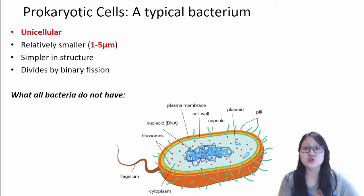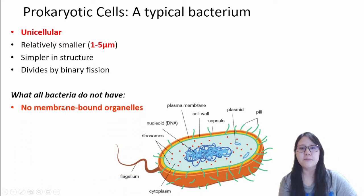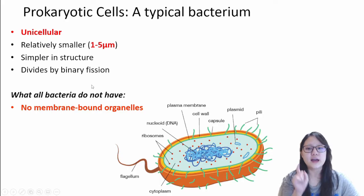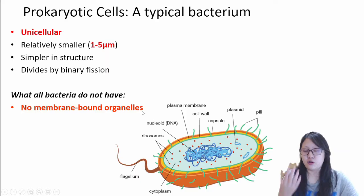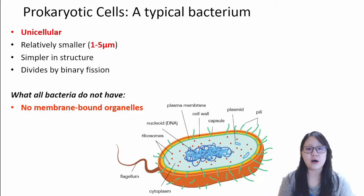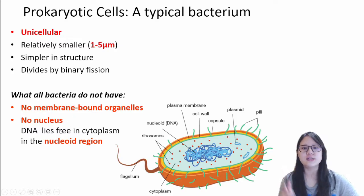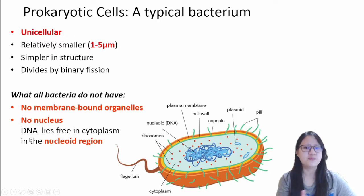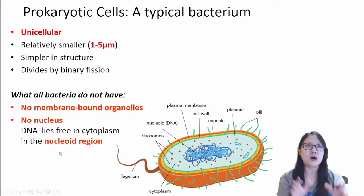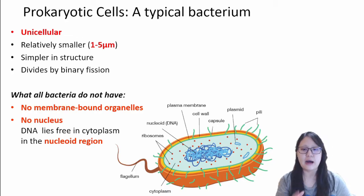What all bacteria do not have is this: they do not have membrane-bound organelles. Prokaryotic cells are unicellular and do not have any membrane-bound organelles. Think chloroplasts, mitochondria — those that have a membrane outside them — so think of ER, Golgi. These are all membrane-bound. There is no nucleus in the bacteria. DNA actually lies free in the cytoplasm, and the area where it lies free is vaguely called the nucleoid region. It is not bound in the nucleus.